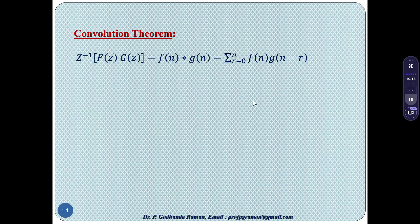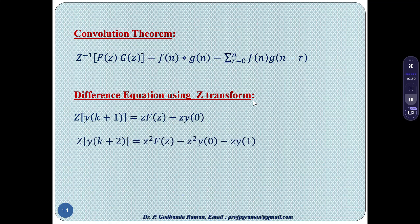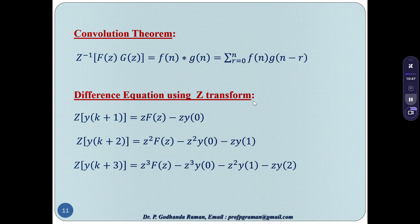Convolution theorem: Z⁻¹{F(z)·G(z)} = f(n) * g(n) = summation r=0 to n of f(r)·g(n−r). For difference equations using Z-transform: Z{y(n+1)} = z·F(z) − z·y(0). Z{y(n+2)} = z²·F(z) − z²·y(0) − z·y(1). Z{y(n+3)} = z³·F(z) − z³·y(0) − z²·y(1) − z·y(2).